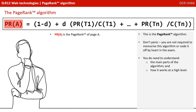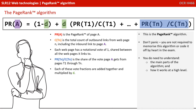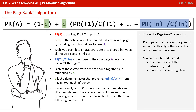So let's just break down parts of this algorithm. PRA is the PageRank of Page A, so the rank of the page we're trying to find. CTN is the total count of outbound links from webpage N, including the inbound link to page A. Each webpage has a notional vote of 1 shared between all the webpages it links to. PRTN divided by CTN is the share of the vote page A gets from pages T1 through TN, and each of these vote fractions are added together and multiplied by D. D is the dampening factor and this prevents PRTN divided by CTN from having too much influence.